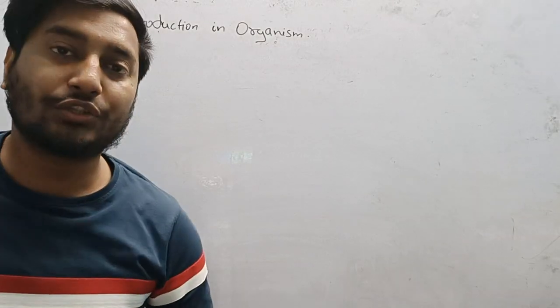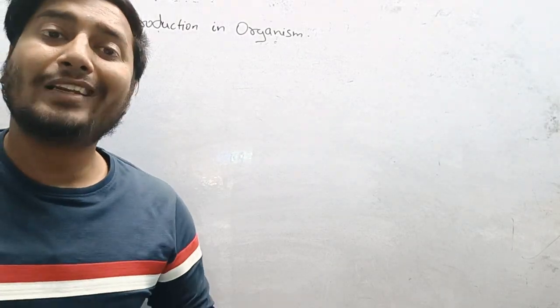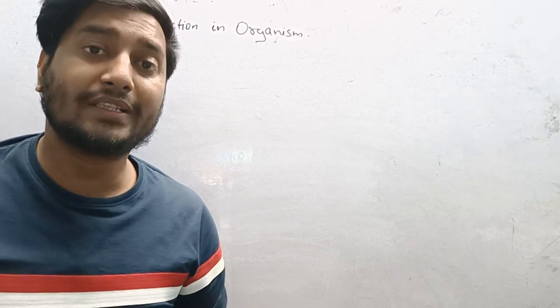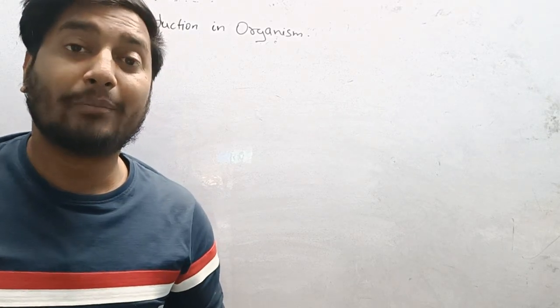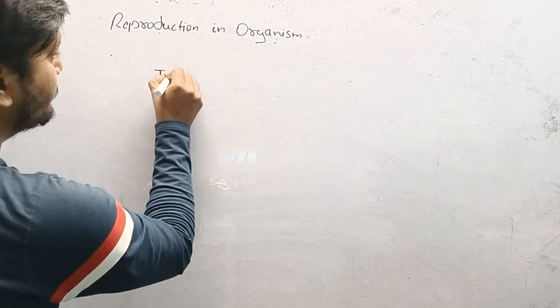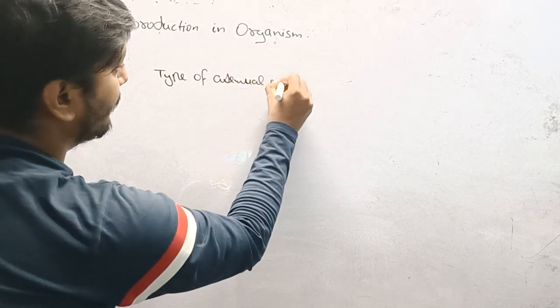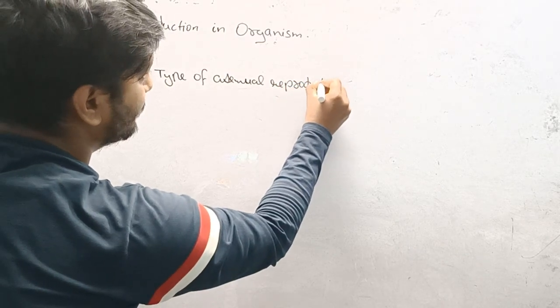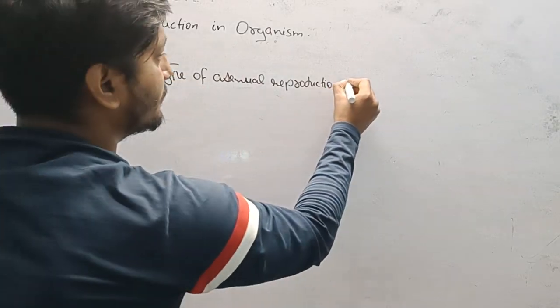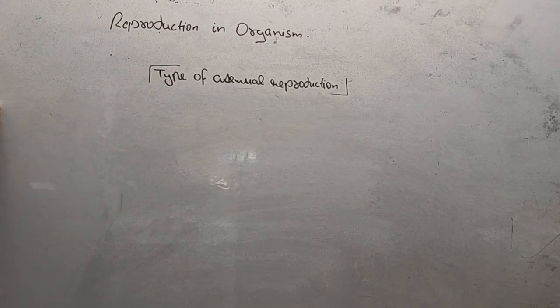When we look at the structures of asexual reproduction, we can differentiate the process into different types. In the earlier lecture we already discussed fission and the types of fission, as well as budding. In this lecture we are going to further discuss the types of asexual reproduction. Another type of asexual reproduction is spore formation.